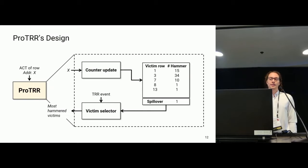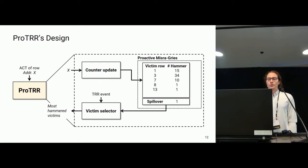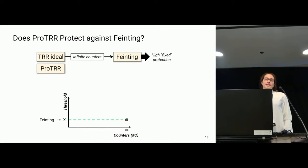To solve limited storage, let's introduce the ProTRR design. It's similar to the design shown before, but with a fundamental difference in how we save and store values. We store victim rows and use our novel data structure called proactive miseries, which is functionally based on miseries. We introduce a novel way to size it depending on this proactive environment, and also introduce the possibility to prune entries — setting their value to zero — once they are refreshed.